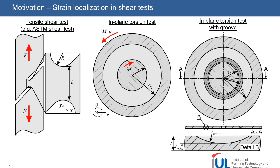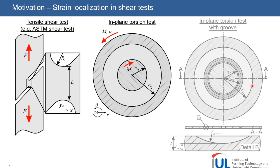These are the classical shear test, for example the ACM shear test where the load is applied using conventional tensile testing machines, and the in-plane torsion test where a round specimen is clamped in the center and in the outer ring and a torque is applied which leads to ideal simple shear deformation. The last specimen is the in-plane torsion test with circumferential groove, which is investigated in detail in the conference proceedings but basically not in my today's talk.